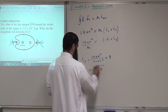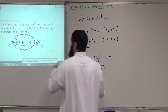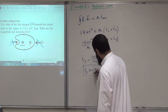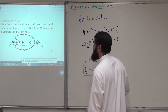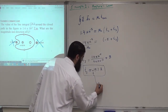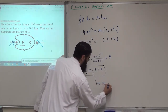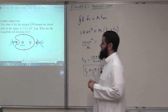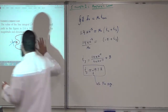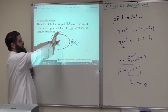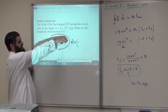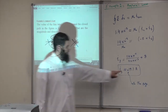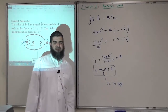Since i3 is positive and the positive direction in this case is into the page — because your fingers follow the Amperian path direction and the thumb points inward — i3 being positive means it is directed into the page.